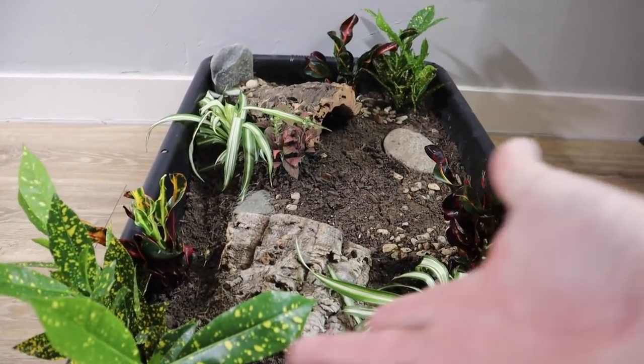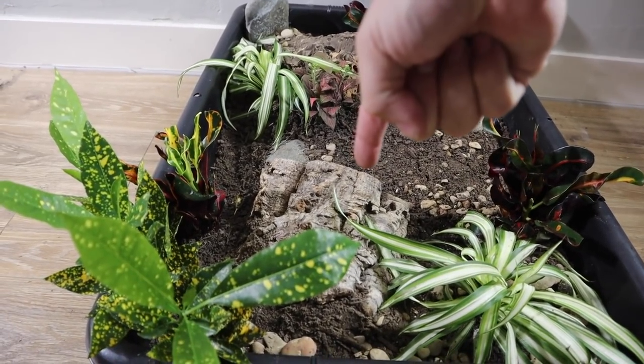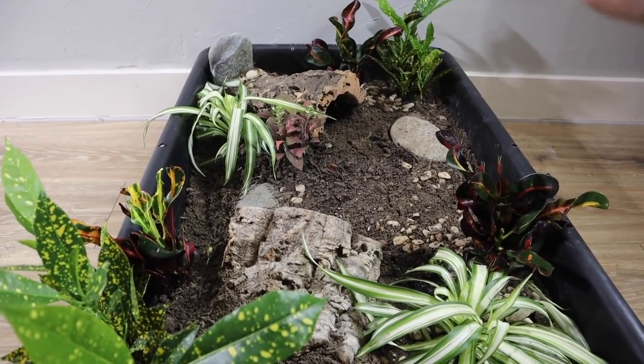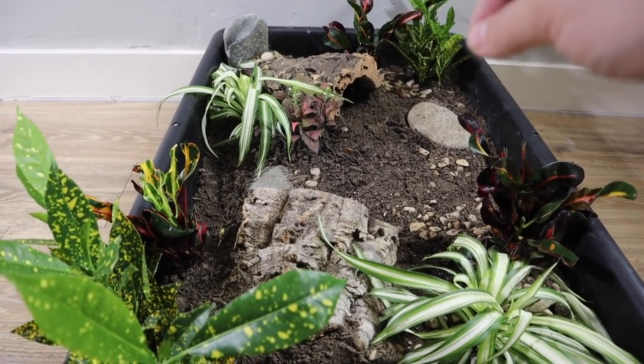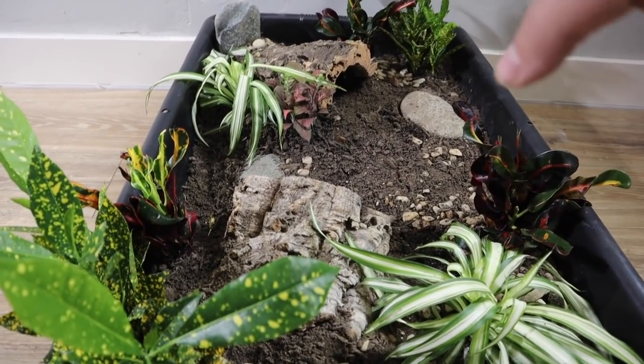This thing is done as you can tell. We have a cork hide here, we have another cork hide right here, we have multiple plants, rocks, things of that nature. The dirt is at a low enough level that the turtle cannot climb up on the side and actually get out. So now we have two things left to move in.